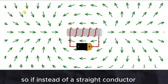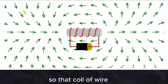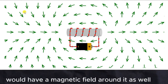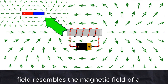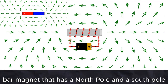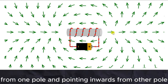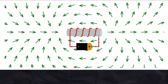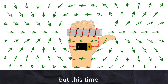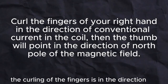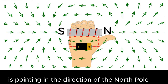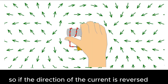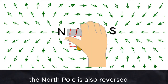If instead of a straight conductor we have a coil of wires through which a current is flowing, that coil of wire would have a magnetic field around it as well, and that magnetic field resembles the magnetic field of a bar magnet with a north pole and a south pole, with arrows pointing outwards from one pole and inwards from the other. You can find the north pole using the right-hand grip rule: the curling of the fingers is in the direction of the current, and the thumb points in the direction of the north pole. If the direction of current is reversed, the north pole is also reversed.